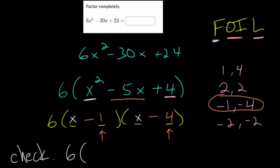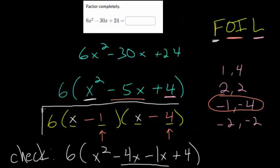I'll just rewrite it and multiply the two binomials using FOIL. x and x gives us x², x and -4 would be -4x, the inner gives you -1 and x which is -1x, and the last ones -1 and -4 would be positive 4. These two middle terms do combine to give you -5x.